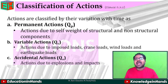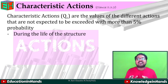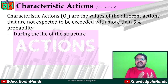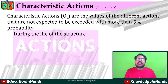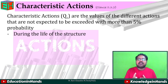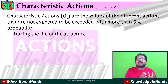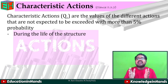The next important classification is characteristic actions. As per clause 5.3.2, characteristic actions Qc are the values of different actions not expected to be exceeded with more than 5 percent probability during the life of a structure. If we consider the life of a structure as 50 years, the actions acting on it will not exceed a 5 percent mean probability. This is defined using inverse bell theory in probability and statistics.